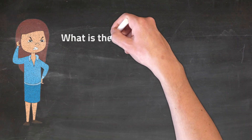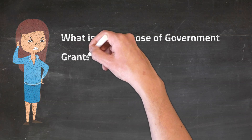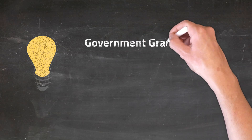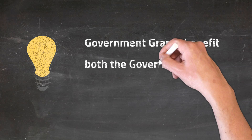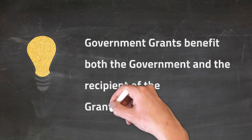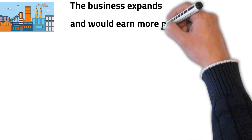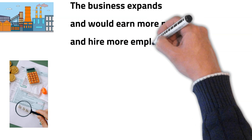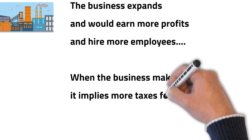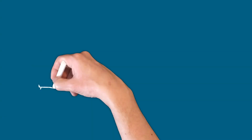Now, if you are thinking what exactly is the purpose of Government Grants — Government Grants benefit both the government as well as the enterprises. The business expands and would earn more profits and hire more employees, while the government will earn more taxes because when the business makes more profit, it implies more taxes for the government, and also there will be a decrease in unemployment.